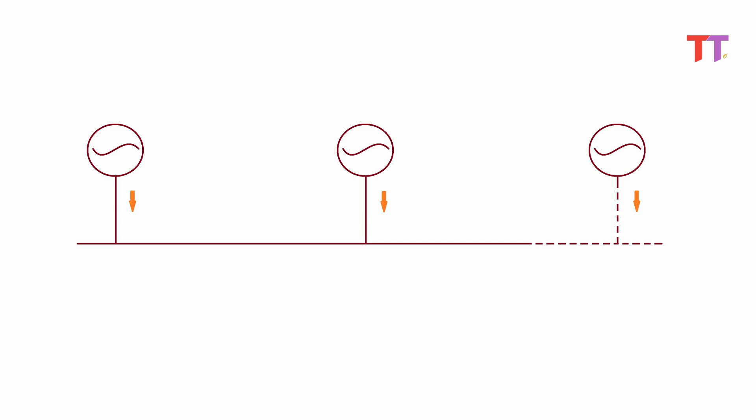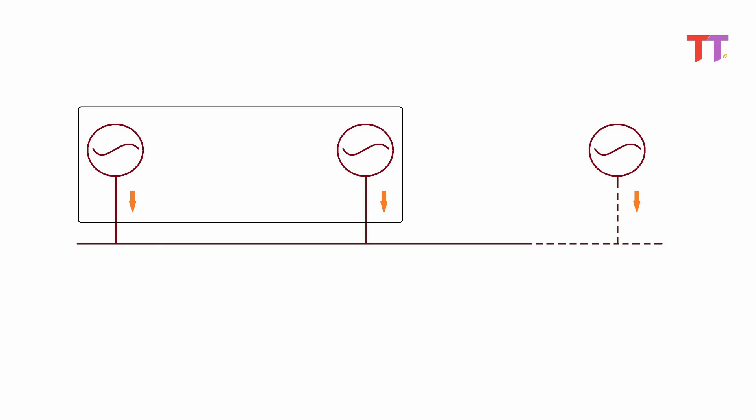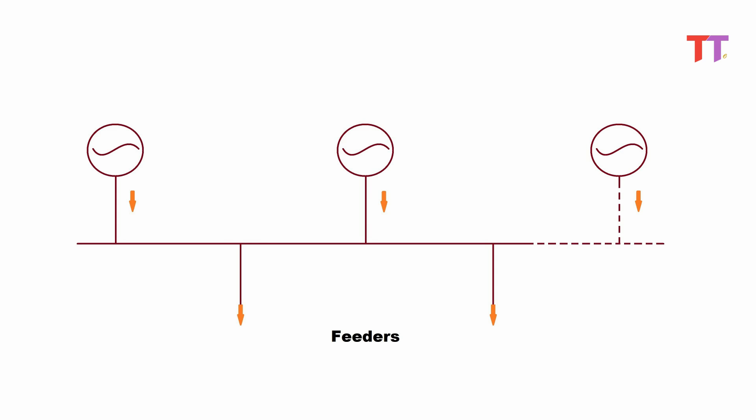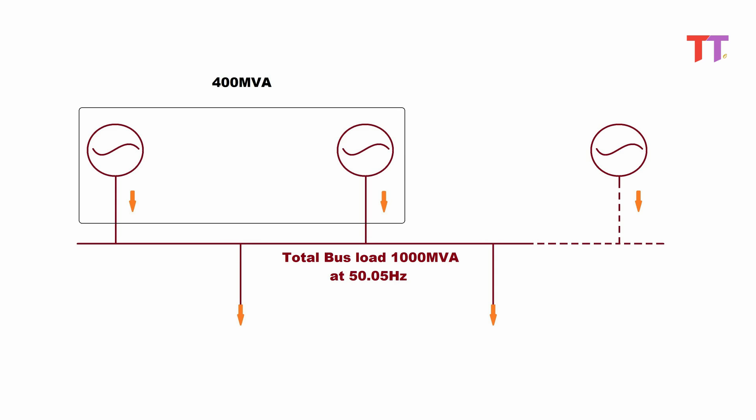Let us discuss with an example. This is a bus. Electric power to this bus is supplied by a number of generators running in parallel, out of which let's consider two generators here. It also has feeders to which load is connected. Suppose this bus has a load demand of 1000 MVA at a frequency of 50.05 Hz, out of which 400 MVA is supplied by these two generators and the rest 600 MVA by other generators running in parallel.